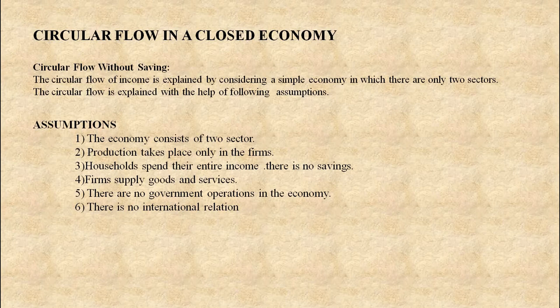So, households are the owners of the factors of production. They are consumption units. Firms are production units — firms are the producing units who decide what, where, how and for whom to produce goods and services. And of course, firms are using the services of factors of production supplied by households.